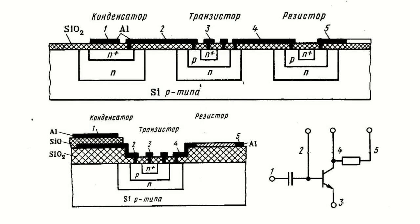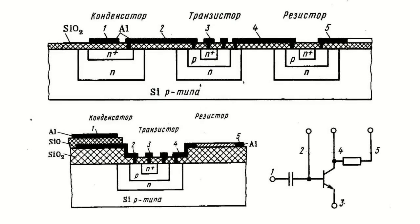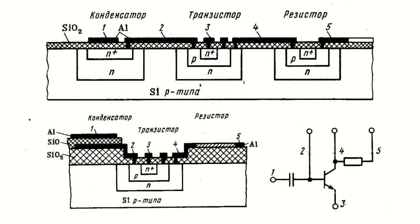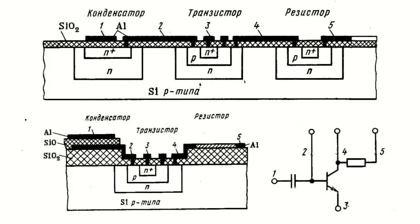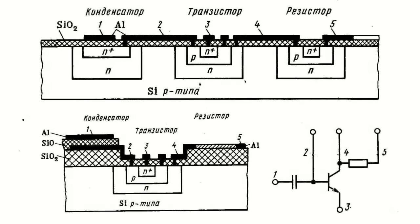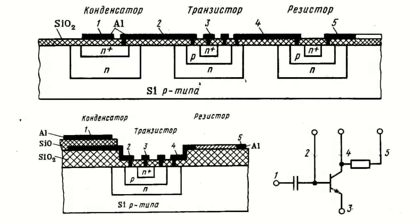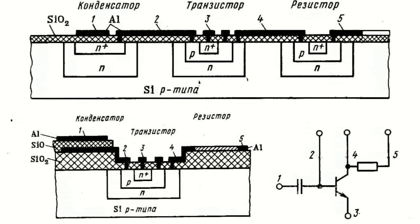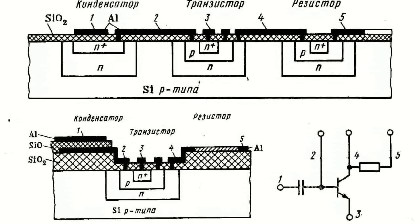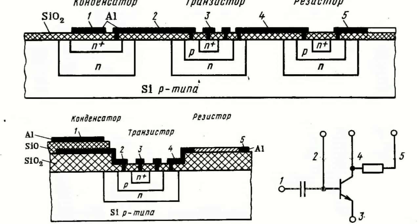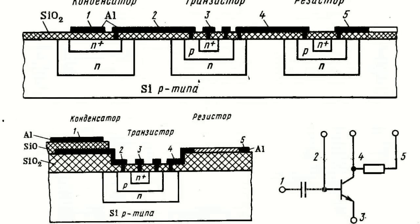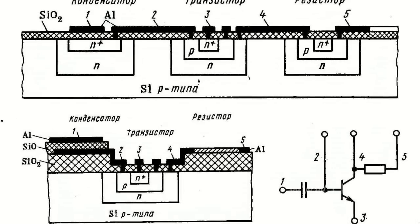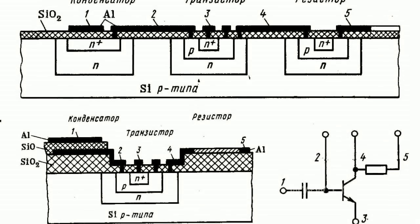Variants of structures of semiconductor integrated circuits with different passive components implementation are presented in the following figure. Individual elements necessary for operation of the circuit are connected by means of thin metal strips spread onto the oxidized surface of the crystal. The figure also shows the equivalent circuit of these structures.